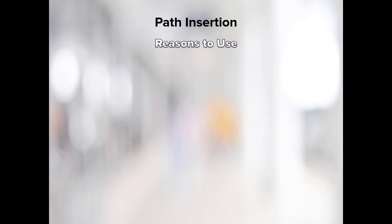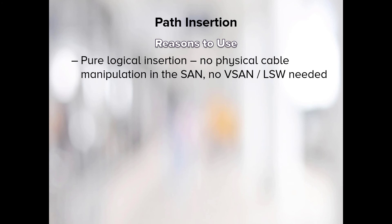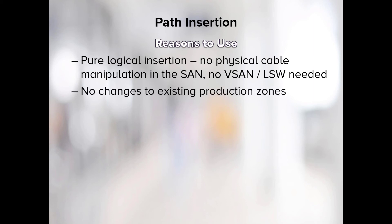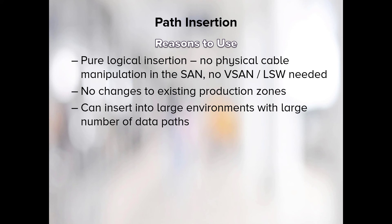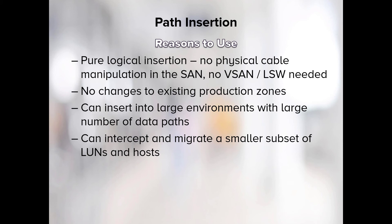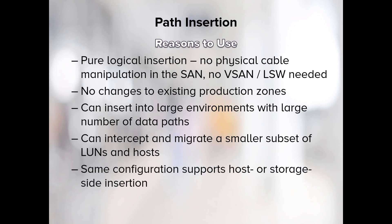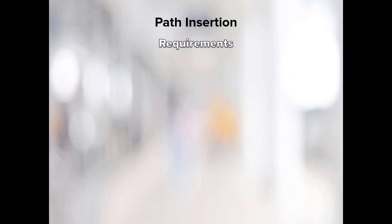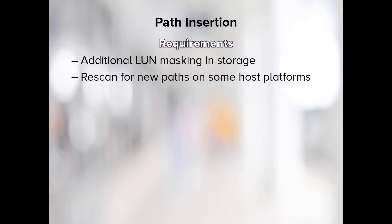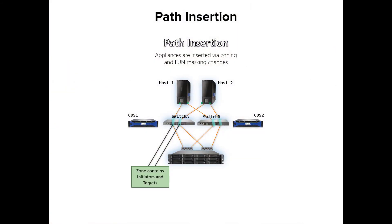Reasons to use path insertion: Pure logical insertion requires no physical manipulation of cables in the SAN and no vSAN logical switch is required. No changes are required to the existing production zones — the DMS GUI wizard will temporarily add new zones. This insertion method provides flexibility to insert into large environments with a large number of data paths to intercept and migrate a smaller subset of LUNs and hosts. It also allows the same configuration to support host side or storage side insertion. Requirements: This insertion method requires additional LUN masking and storage, and also requires a rescan for new paths on some host platforms. For path insertion, appliances are inserted via zoning and LUN masking changes.